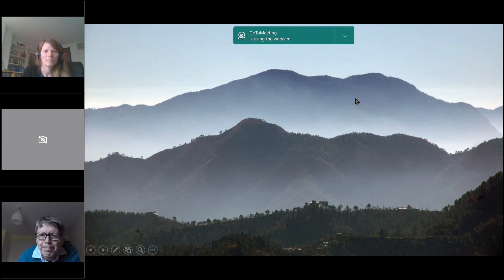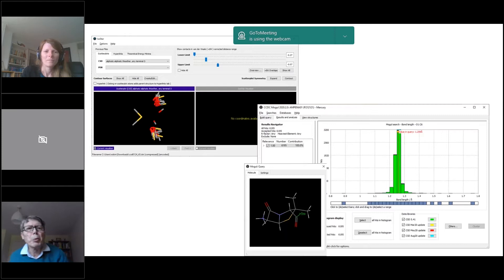Two programs that I didn't mention in my review of the history of software development at CCDC were IsoStar and Mogul. For anybody who's a newcomer, IsoStar is a package that will give you pictures of the distributions of one functional group around another when they're making intermolecular contacts.